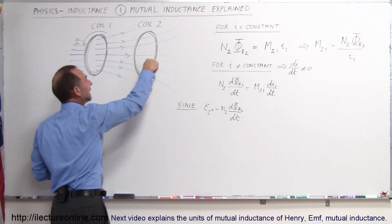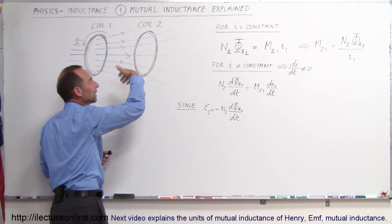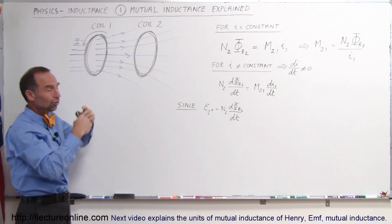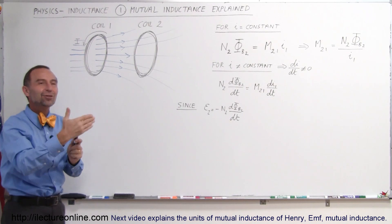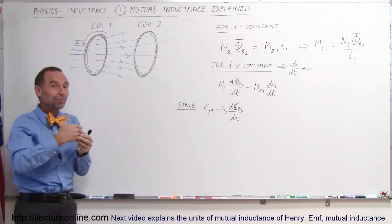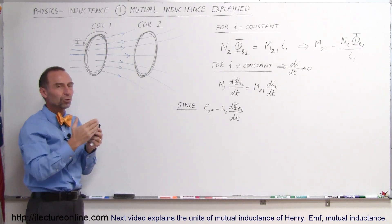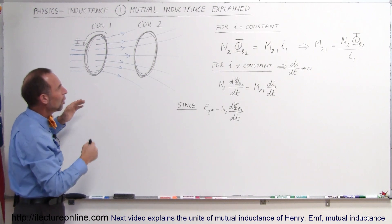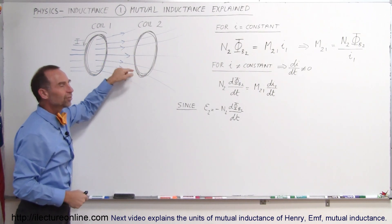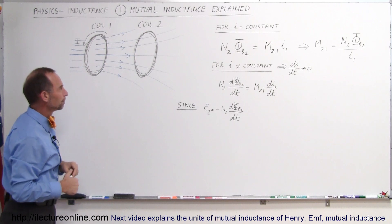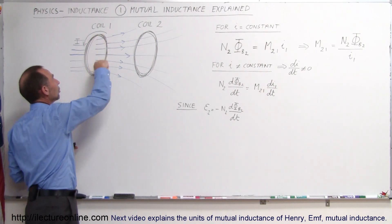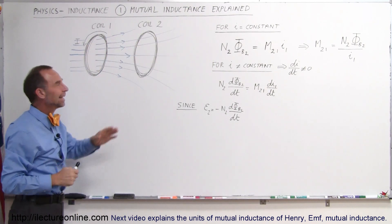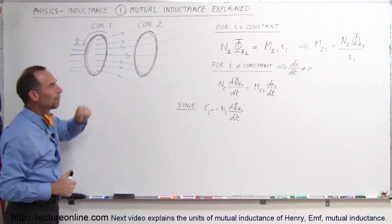If there are more turns in the second coil, the effect is magnified proportionally. For example, ten turns instead of one gives a tenfold effect; a hundred turns gives a hundredfold effect. The mutual inductance also depends on how many turns are in the first coil — more loops in the first coil will also cause a greater effect to exist in the second coil.